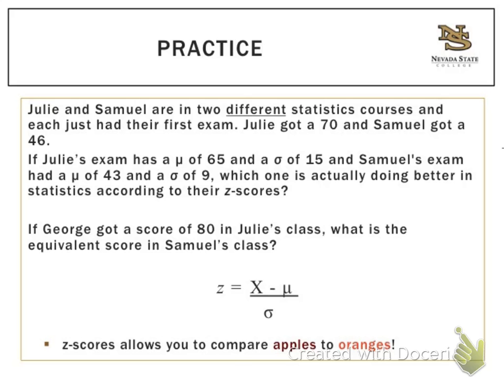Julie got a 70 on her exam and Samuel got a 46 on his. At first glance it looks like Julie is doing a lot better in her statistics class than Samuel is, but we're going to use standard deviations and z-scores to figure out if that's actually true.